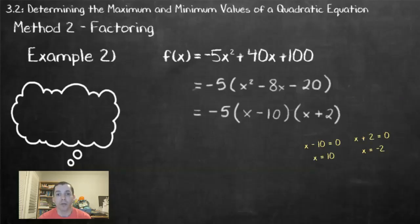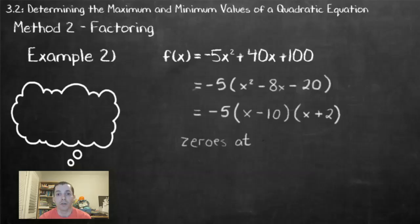Now that I have my binomials, we can set each binomial equal to 0 and then solve to determine what my zeros are. This gives me zeros of x equals 10 and x equals negative 2.